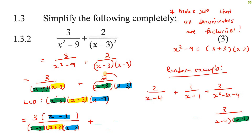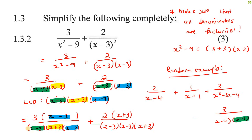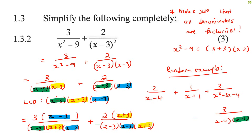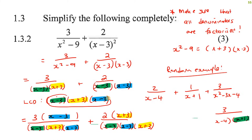Now we make sure this one has the same denominator. It's missing a yellow, so we'll give it a yellow at the top. At the bottom, it already had x minus 3 and another x minus 3, and now we're going to give it x plus 3. So both of these denominators now have all of the different parts of the LCD.